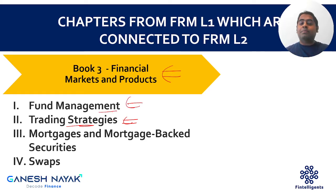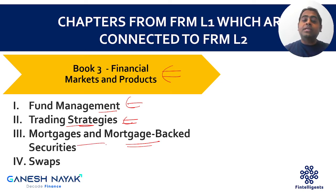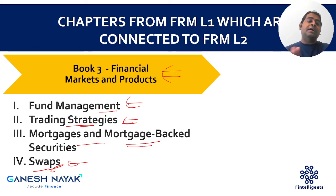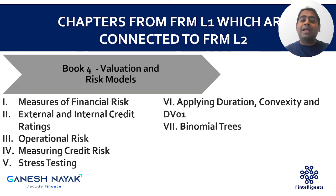There is also a chapter on Fund Management, which I picked because there is an explicit chapter in Investment Management and Risk Management discussing hedge funds. This chapter also covers hedge fund strategies, helping you connect those chapters easily. Mortgage and Mortgage-Backed Securities is connected to securitization — in Level 2's credit risk book, around five chapters are based on securitization. Swaps is also important because Level 2 discusses interest rate swaps and cross-currency swaps.